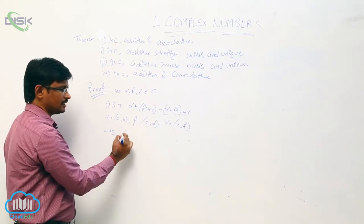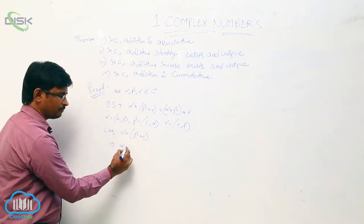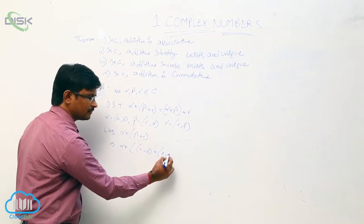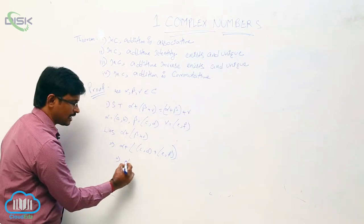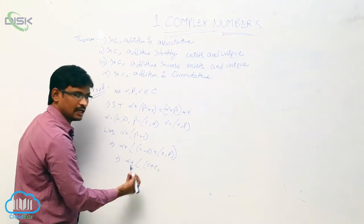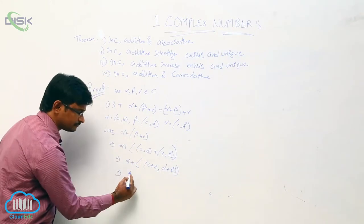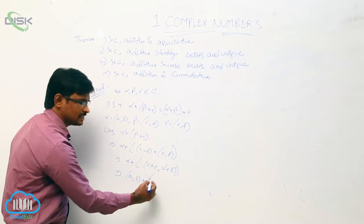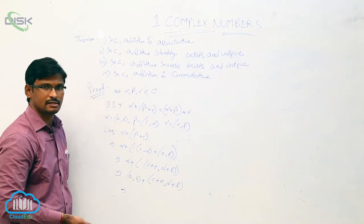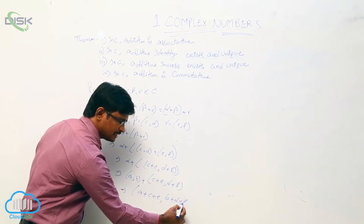So we have to prove these two sides. I am considering LHS, that is alpha plus (beta plus gamma). Alpha plus — beta value is (c, d) plus gamma value (e, f). This is the addition of two complex numbers, so what is the value? (c+e, d+f). Now what is the value of alpha? (a, b) plus (c+e, d+f). If you add these two complex numbers, we get (a+c+e, b+d+f). This is the LHS.